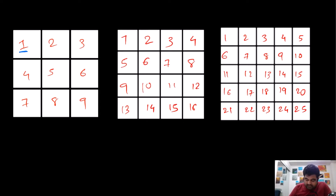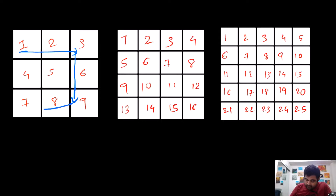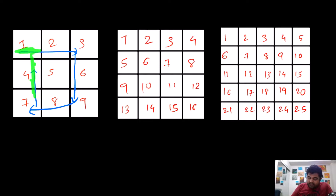We always start at the zero-zero position and then start traversing to the right until we hit a boundary. Once we hit a boundary, we go downwards. When we hit a boundary going downwards, we go left. When we hit a boundary going left, we go upwards. But this time we don't wait to hit a boundary — we stop when we reach a node that has already been visited. So we are traversing in a direction until we hit either a boundary or a visited node. This is a really important concept to understand.